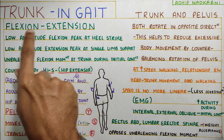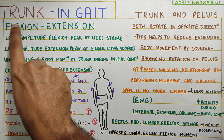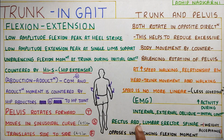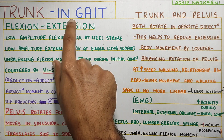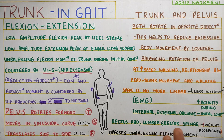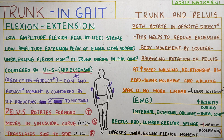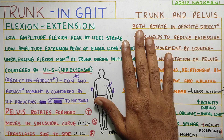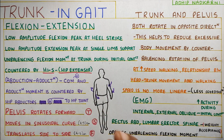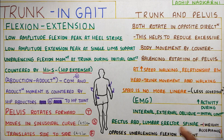Apart from rotation, flexion and extension were also mentioned. Flexion is caused by the rectus abdominis, while extension is by the erector spinae — specifically the lumbar erector spinae. Both the flexion-based and extension-based muscles are more active during the weight acceptance part, that is during the stance phase. Whereas the rotation muscles — internal and external obliques — are more active during the initial contact phase.